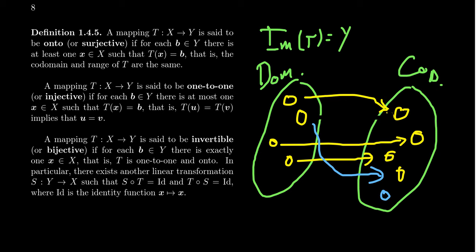It doesn't necessarily have to be an onto map to be one-to-one. You don't have to be onto. What it just means is that every vector has at most one vector mapping onto it — that's one-to-one. Every vector over here goes to one, so there's this one-to-one correspondence between the domain and the image of the transformation.